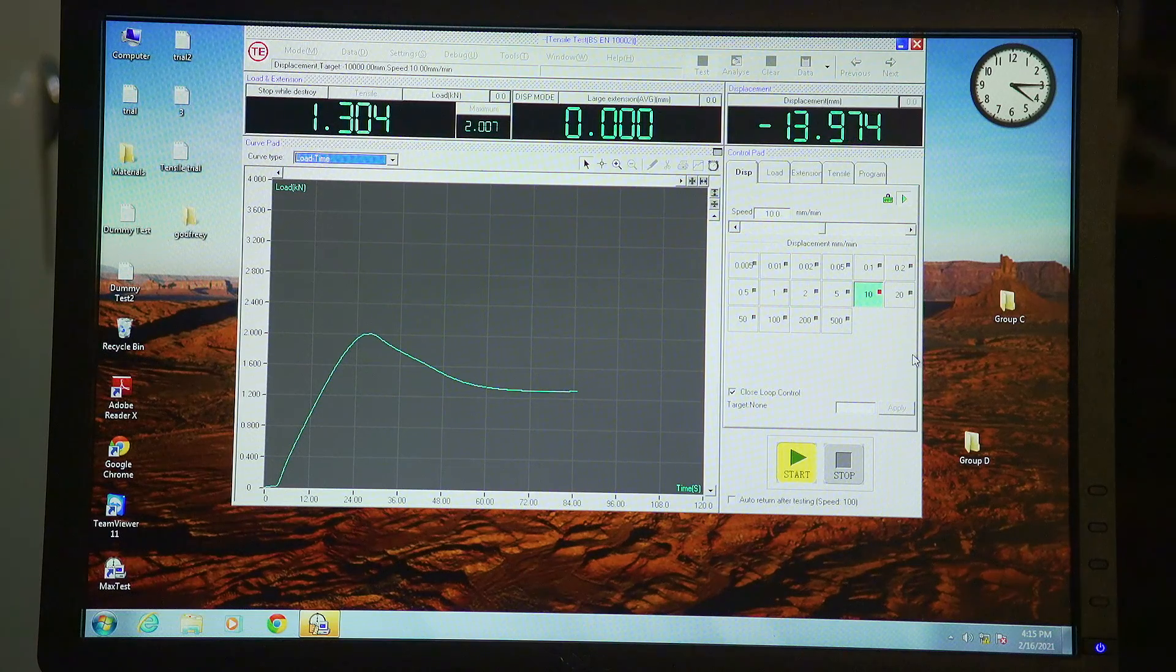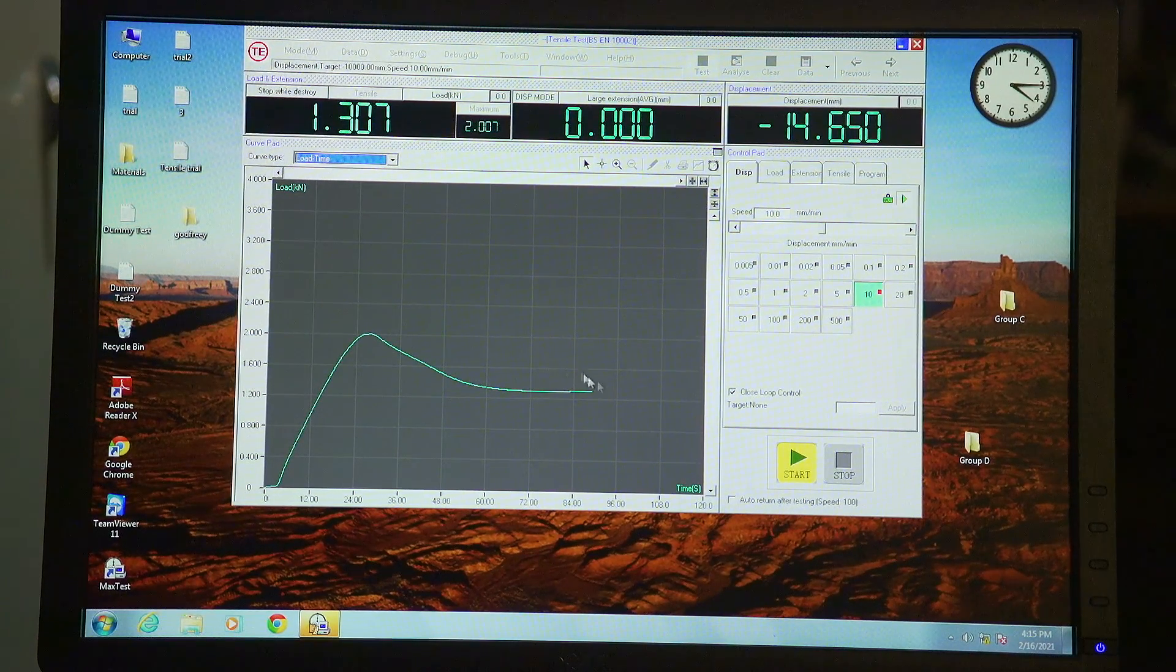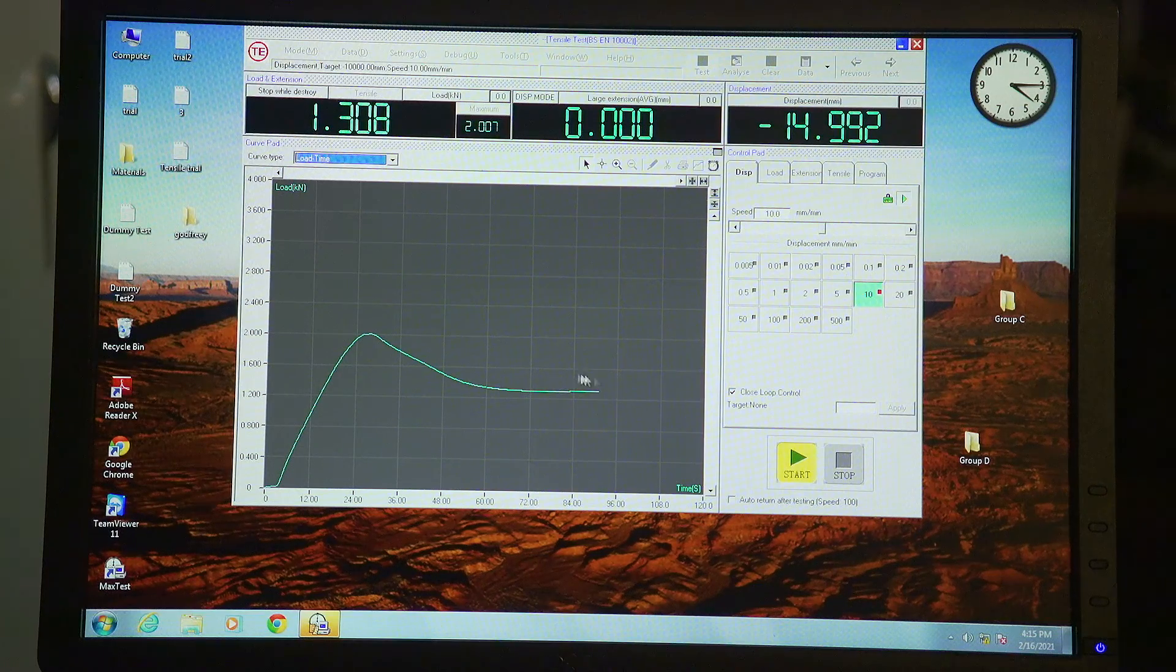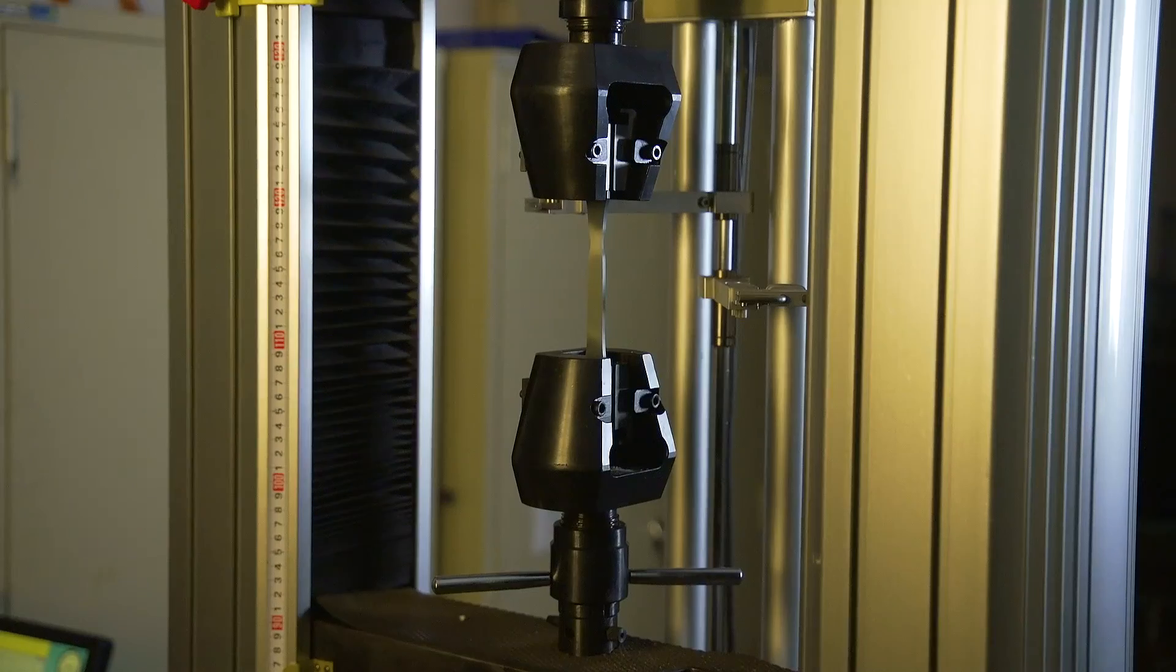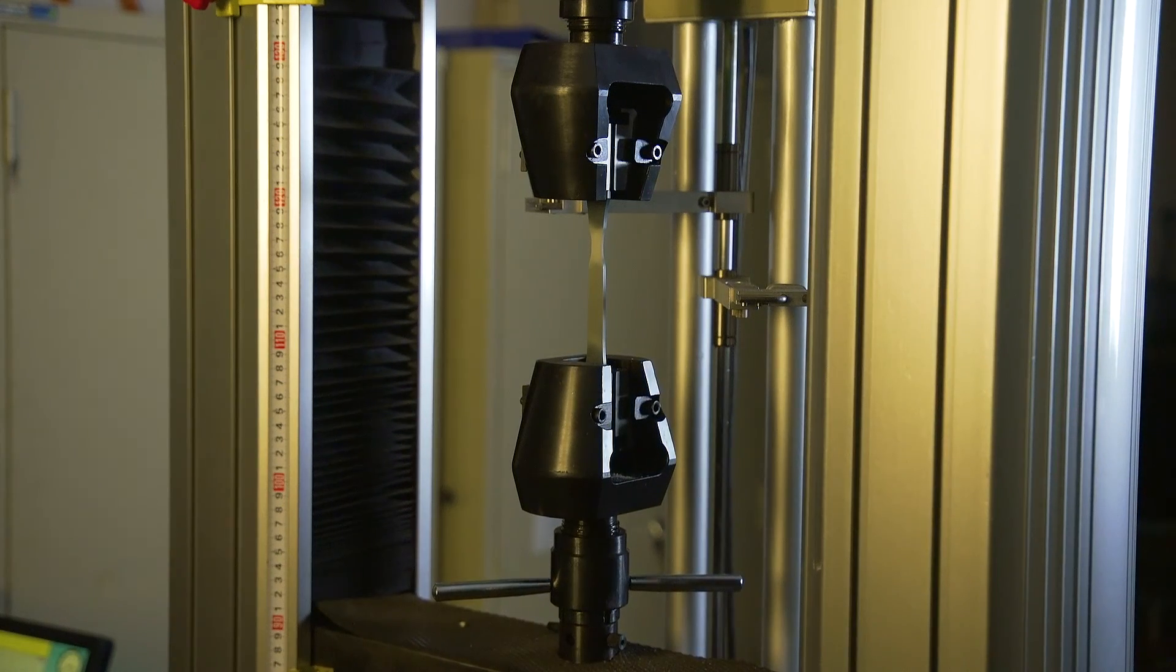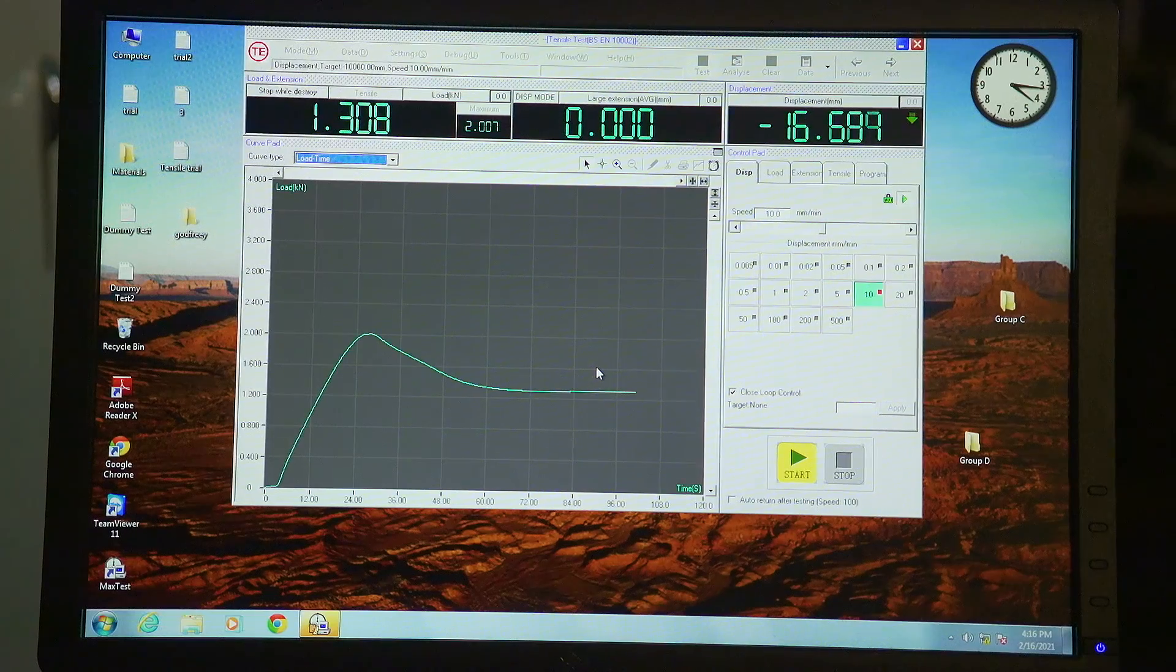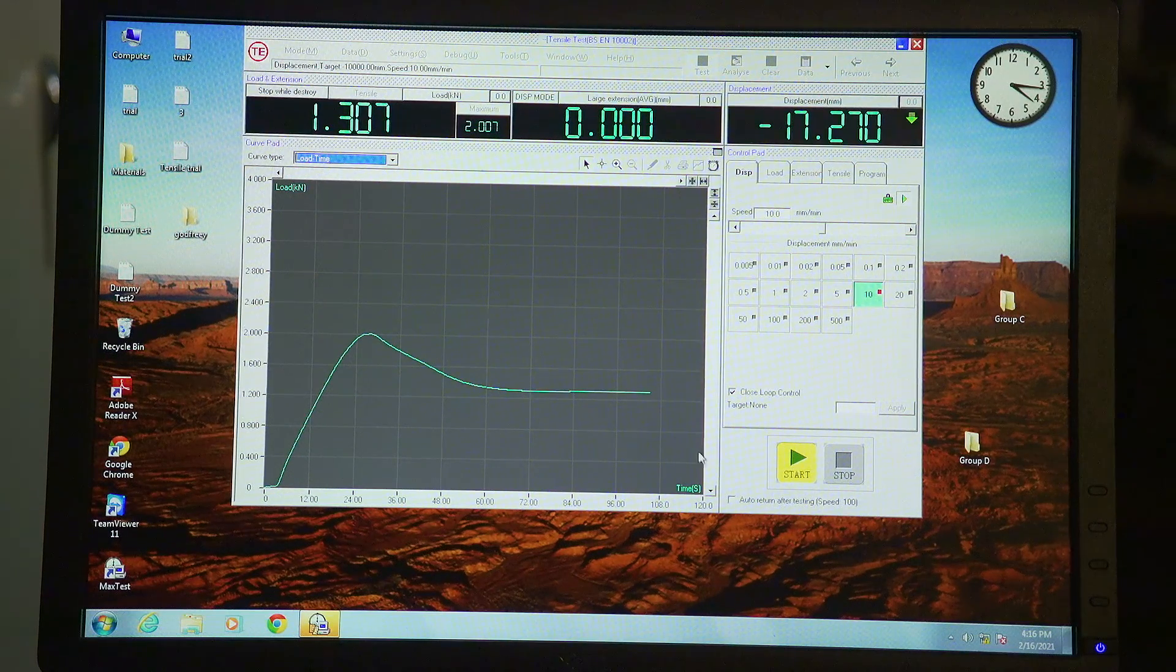And essentially, what's happening in this region of the curve is that, at this point, the chains within the polymer are starting to now untangle and start straightening out. And the resistance to them untangling is what we are seeing on the load displacement curve here.